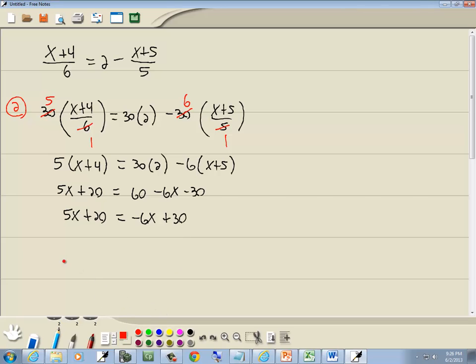Okay, step 3. Get everything with an x on one side and numbers on the other. So I'll take negative 6x to the left side, I'll take 20 to the right. Anytime you take anything across an equals, remember the sign changes. The negative 6x becomes a positive 6x, and the 20 becomes a negative 20. So we've got 5x plus 6x is 11x, and 30 minus 20 is 10.